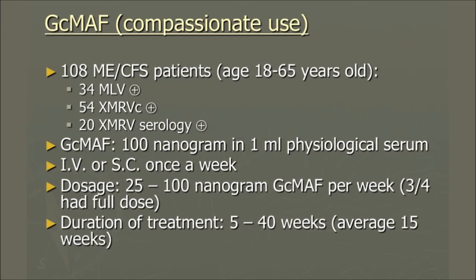We've treated more than 108 patients, but I haven't had time to calculate exact results. In the first months and even the first year when we used GC-MAF in compassionate use, the rationale was that patients had to show some retroviral activity, and we took patients where we found evidence of retroviral activity. These 108 patients were given 100 nanograms in one milliliter of physiological serum. A nanogram is 10 to the minus 9th — so what we're giving is one ten-thousandth of a milligram, just a few thousand particles. It's an extremely low dose. It can be given IV or subcutaneously.